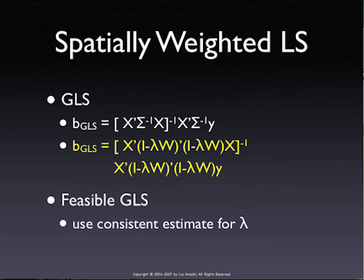If it's an autoregressive process, the feasible GLS replaces lambda with a consistent estimate. The difference from the time series case is that there is no straightforward, easy-to-find consistent estimate for the parameter. The time series approach is to run another OLS on the residuals, but you can't do that here because OLS is not consistent in the spatial lag model. So you have to obtain a consistent estimate for lambda another way — either through maximum likelihood or a generalized moments approach.